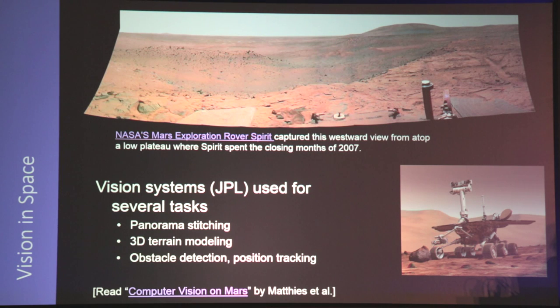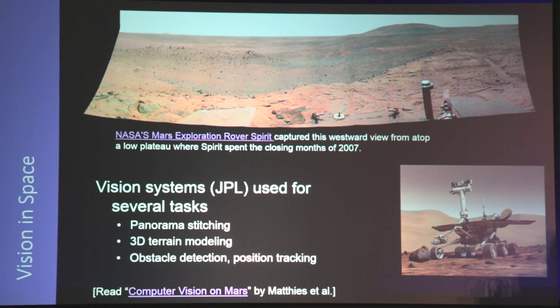There are other useful applications, like using a computer vision system on a robot sent to Mars or another extraterrestrial planet. You can build panoramic pictures of the terrain, use computer vision to understand the scene around you, help the robot navigate, and help scientists understand what lies out there.